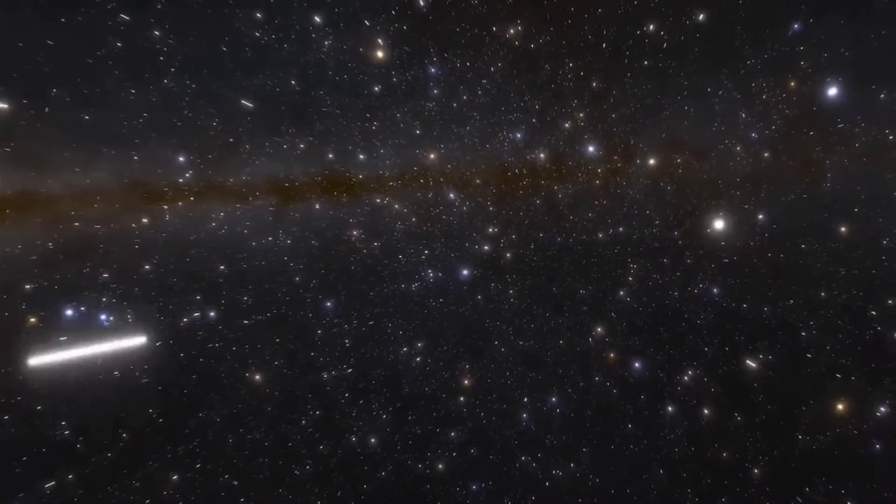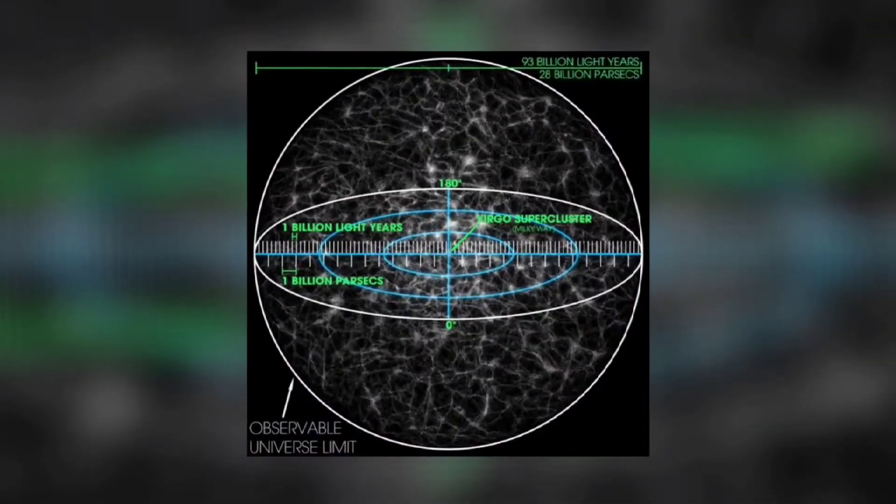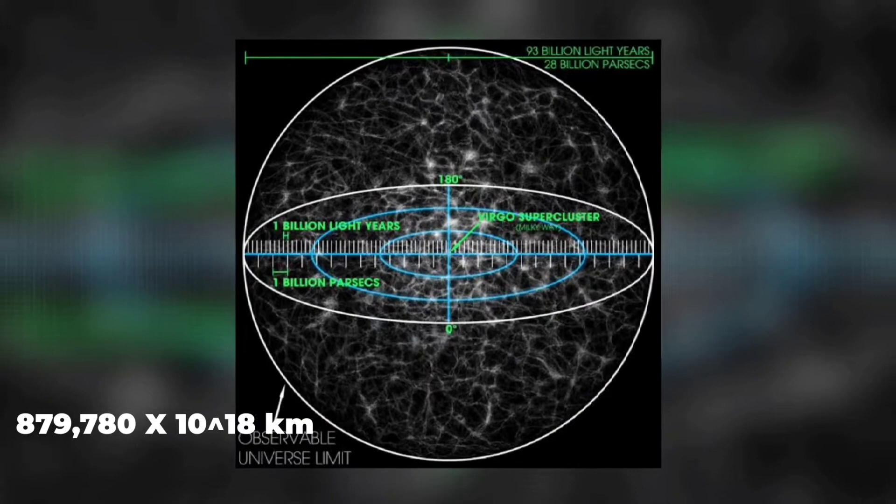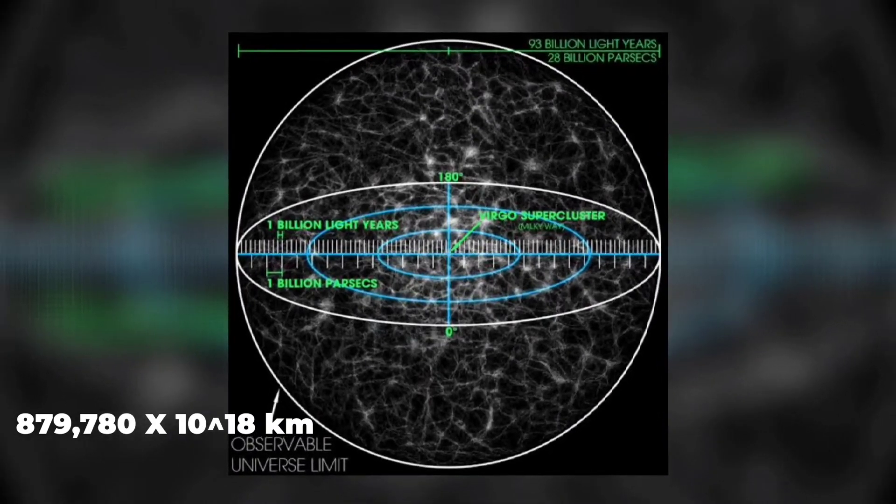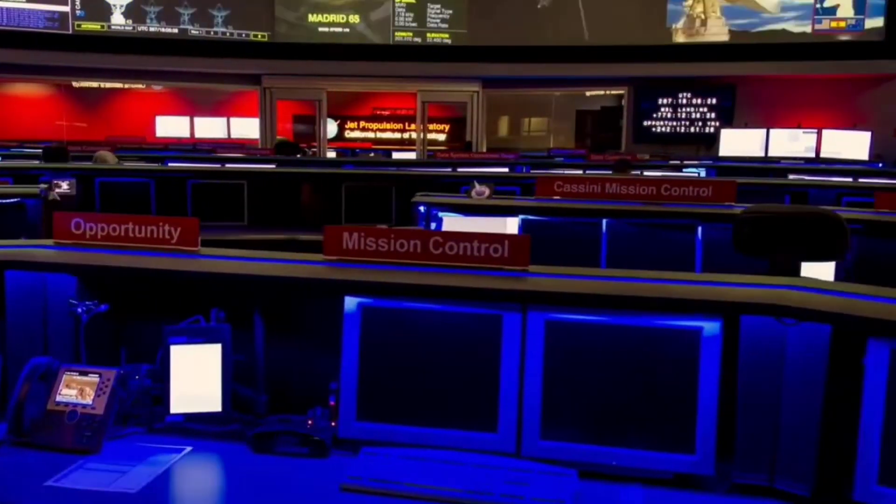And here we are talking about 1 giga parsec, which is around 93 billion light years, which is 879,780 times 10 to the 18th power kilometers. Magnificent, isn't it? Wait, there is some miscalculation in this, or not?